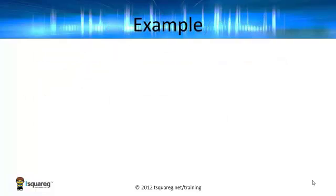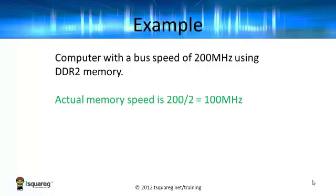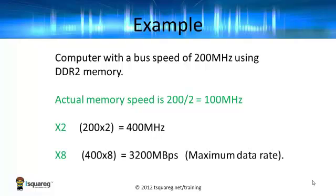Let's have a look at an example. A computer with a bus speed of 200 MHz is using DDR2 memory. The actual memory speed is 200 divided by 2, which is 100 MHz. Remember, the memory speed is doubled because we're using DDR2 memory, so DDR2 has increased the memory speed to 200 MHz. We can now use the 200 MHz to work out the maximum data rate. We take the bus speed, multiply it by 2, then multiply it by 8. The final answer is the maximum data rate — in this example, 3,200 MB per second.